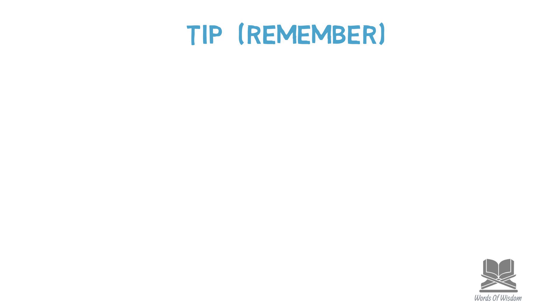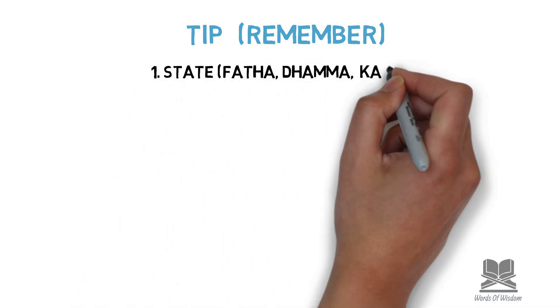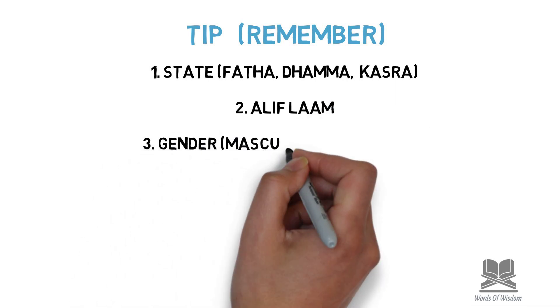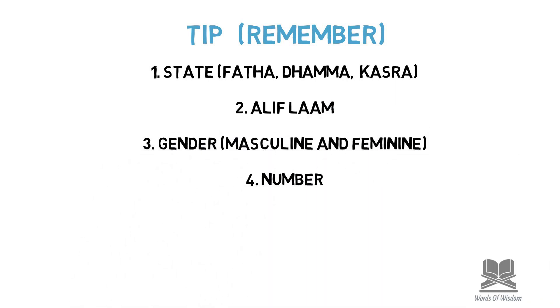Now one of the rules of musuf sifa is that when someone or something is being described, both of the words have to match in four things. If they match in four things, then that phrase can be classed as musuf sifa. Number one is that the state of both of them must be exactly the same: so if the first word has two dhamma, two kasra, or two fatha, the second word needs to have the same. If the first word has one fatha, one dhamma, or one kasra, the second word needs to match as well.